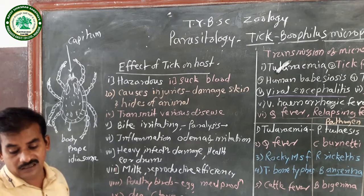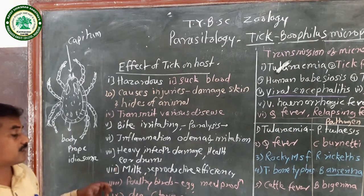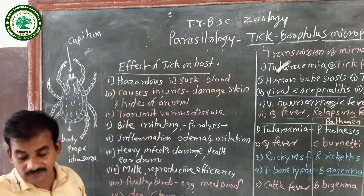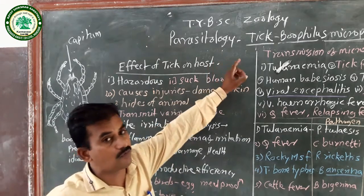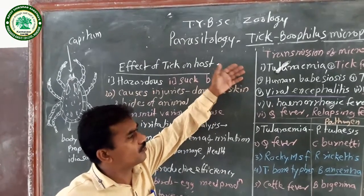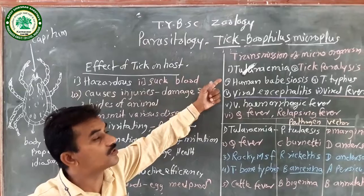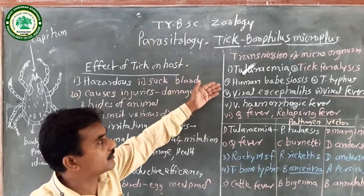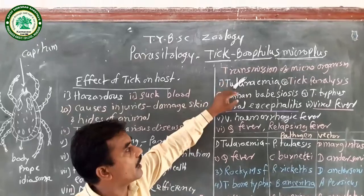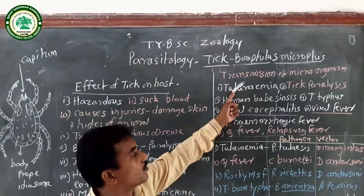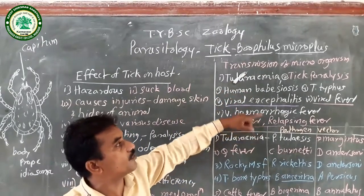Due to heavy infection, some animals — even cattle — die. Toxic substances are synthesized and spread to the host body; this disease condition is called toxicosis. Ticks transmit different types of microorganisms from one host to another. The tick lives on the host and then moves to another host, spreading a number of diseases. One important disease transmitted is tularemia, with different microorganisms transmitted from one host to another through the tick.